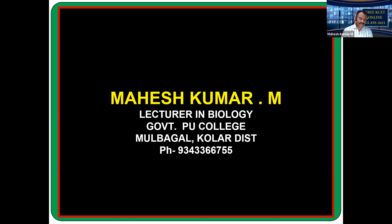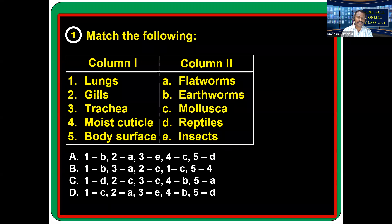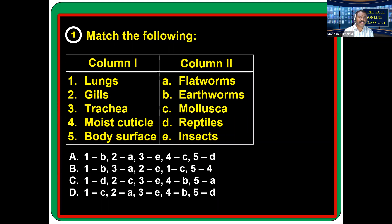When we start with this chapter, the first question is to match organisms with their respiratory organs. When you start with the lungs, you find them in higher organisms like reptiles and mammals. These organisms have lungs as their respiratory organs.